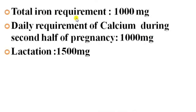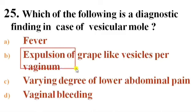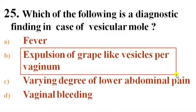The total iron requirement during pregnancy is 1000 mg. The daily requirement of calcium during the second half of pregnancy is 1000 mg, and during lactation is 1500 mg. Next question: Which of the following is a diagnostic finding in case of vesicular mole? Options: A) Fever, B) Expulsion of grape-like vesicles per vaginem, C) Lower abdominal pain, D) Vaginal bleeding. Answer is B — Expulsion of grape-like vesicles per vaginem, which is the confirmatory diagnosis in vesicular mole.